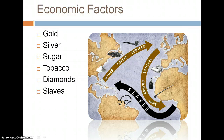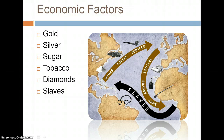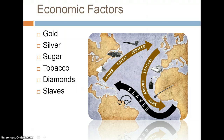Some of the economic factors that drew interest into South and Central America were different riches not as plentiful in Europe and Africa — things such as gold, silver, sugar, tobacco, and diamonds. They were also hugely involved in the slave trade. Compared to the United States, South and Central America had more than double the amount of slaves, which drove their economy. Slaves were used in many different plantations, including sugar plantations, since sugar wasn't as plentiful in Europe.